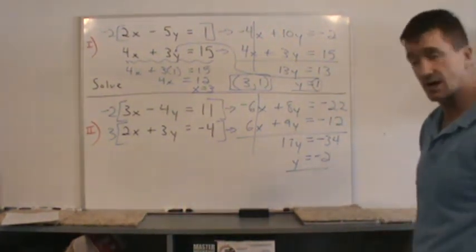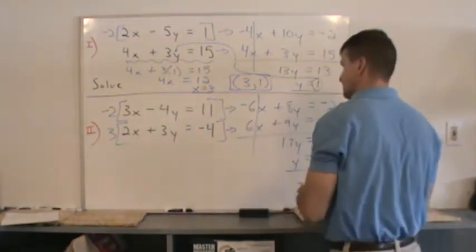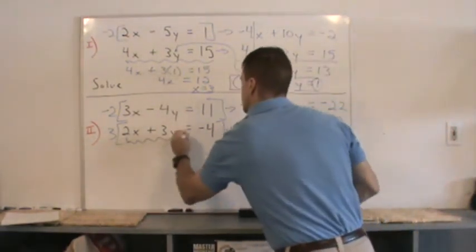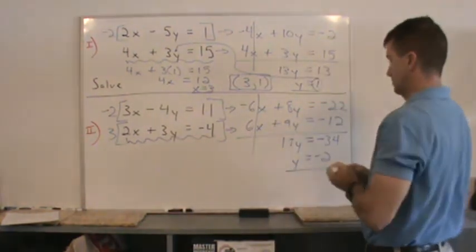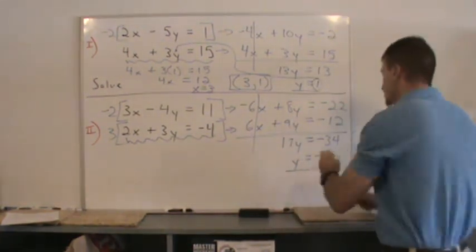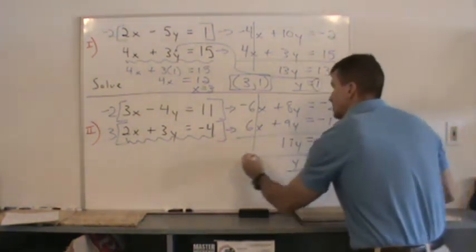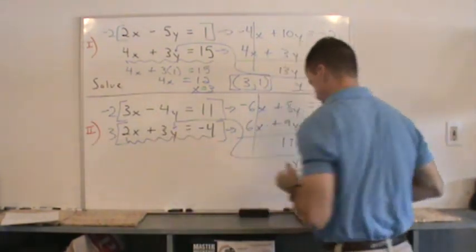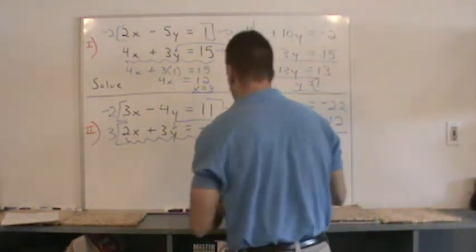Now, all I have to do is get x. I'll use this one right here, even without the 3. The 2x plus 3y equals negative 4. I'll take this negative 2 and substitute it right there for the y. Let's see what we get.